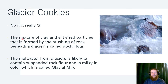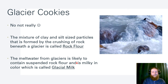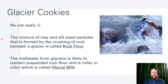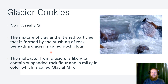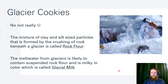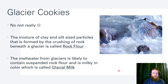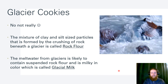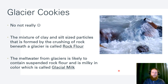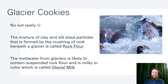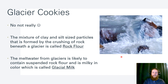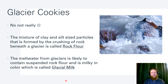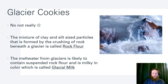These are mixtures of clay and silt-sized particles. As rock is crushed beneath the glacier, we call it rock flour. The meltwater — water melting off these glaciers — is likely to contain that rock flour and is milky in color, so it's called glacial milk.